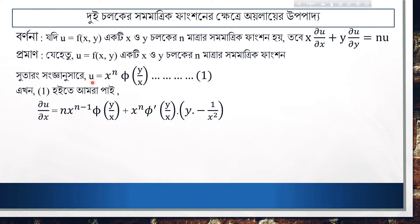Partial derivative work is del. So if we have x to the power n, phi of y by x, it is equal to u into v — a product. So v is derivative of u, and we apply the product rule: v is derivative of u.